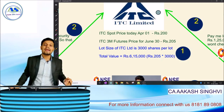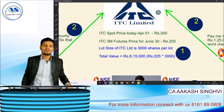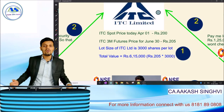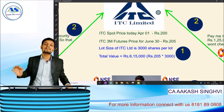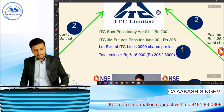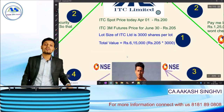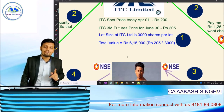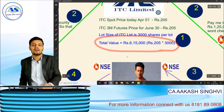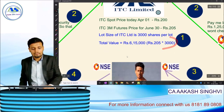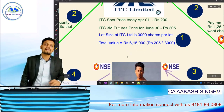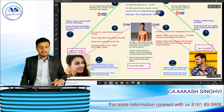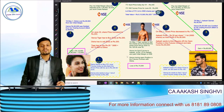To enter into this June futures contract, one must buy or sell a minimum of 3000 shares. Can you buy 5000 shares? No — it can either be 3000 or multiples of 3000. For example, two lots means 6000 shares. The total contract value comes to around six lakh fifteen thousand rupees — June futures price of 205 multiplied by 3000 shares gives six lakh fifteen thousand.